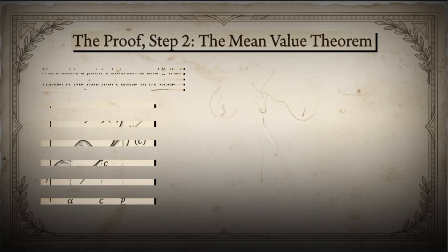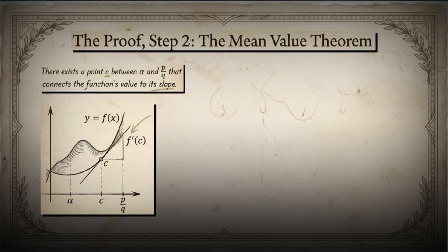Now we apply the mean value theorem. According to this theorem, there exists some point c between alpha and p over q such that the following holds. f of p over q minus f of alpha equals f prime of c times the quantity p over q minus alpha.